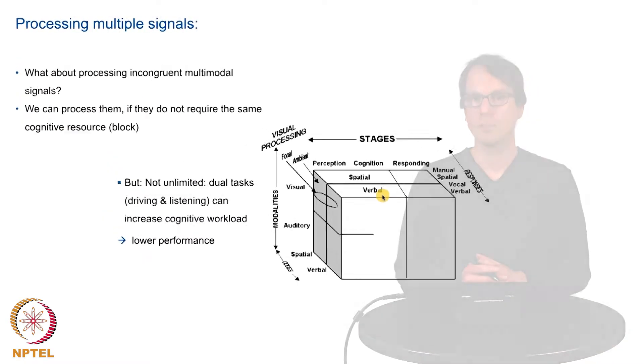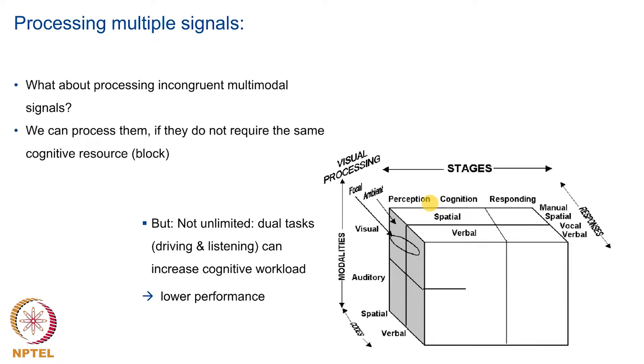For example, here is a model by Wiccans. You can see in this cube the different resources. We have the different modalities, the visual one and the auditory one, but of course that can be easily extended by other modalities such as haptics. For the visual one, we have a speciality, namely focal versus ambient information. Then we have different stages of processing.